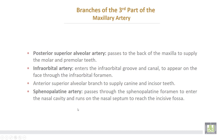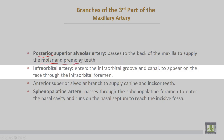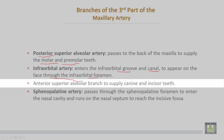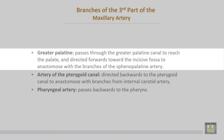The third part of the maxillary artery gives: number one, the posterior superior alveolar artery, which passes to the back of the maxilla to supply the molar and premolar teeth; the infraorbital artery, which enters the infraorbital groove and infraorbital canal to appear on the face through the infraorbital foramen; then the anterior superior alveolar artery to supply the canine and incisor teeth; the sphenopalatine artery, which passes through the sphenopalatine foramen to enter the nasal cavity, running on the nasal septum to reach the incisive fossa; and the greater palatine artery, which passes through the greater palatine canal to reach the palate and runs forwards towards the incisive fossa to anastomose with branches of the sphenopalatine artery.